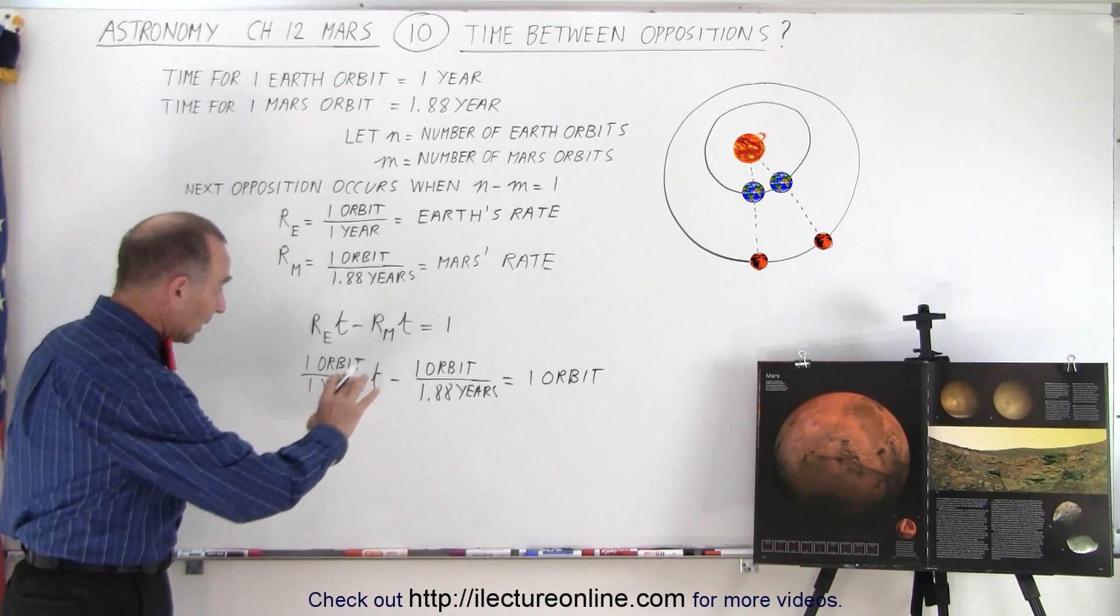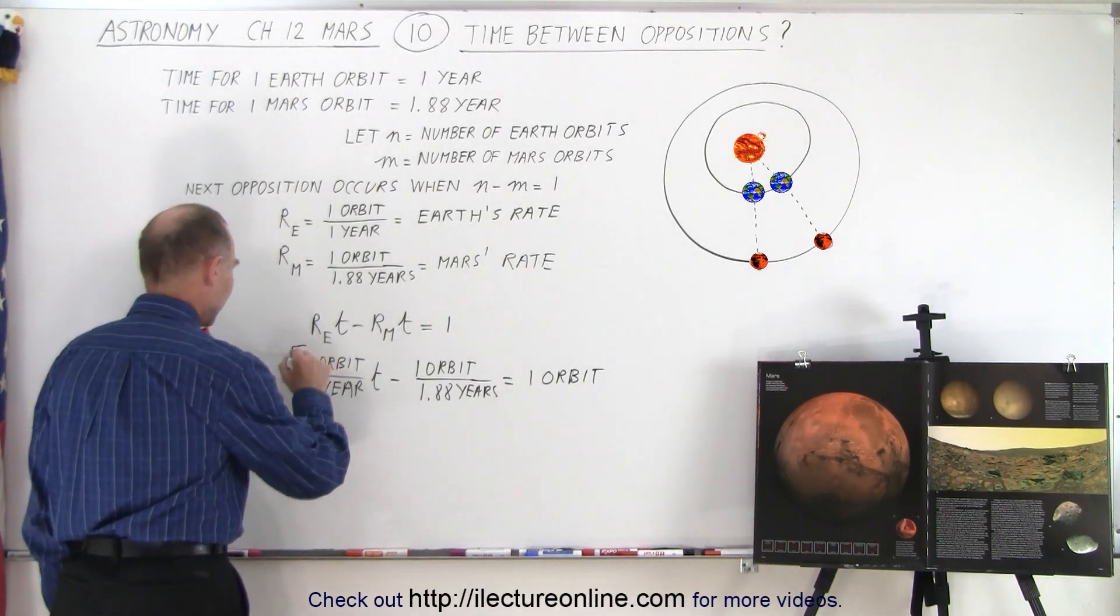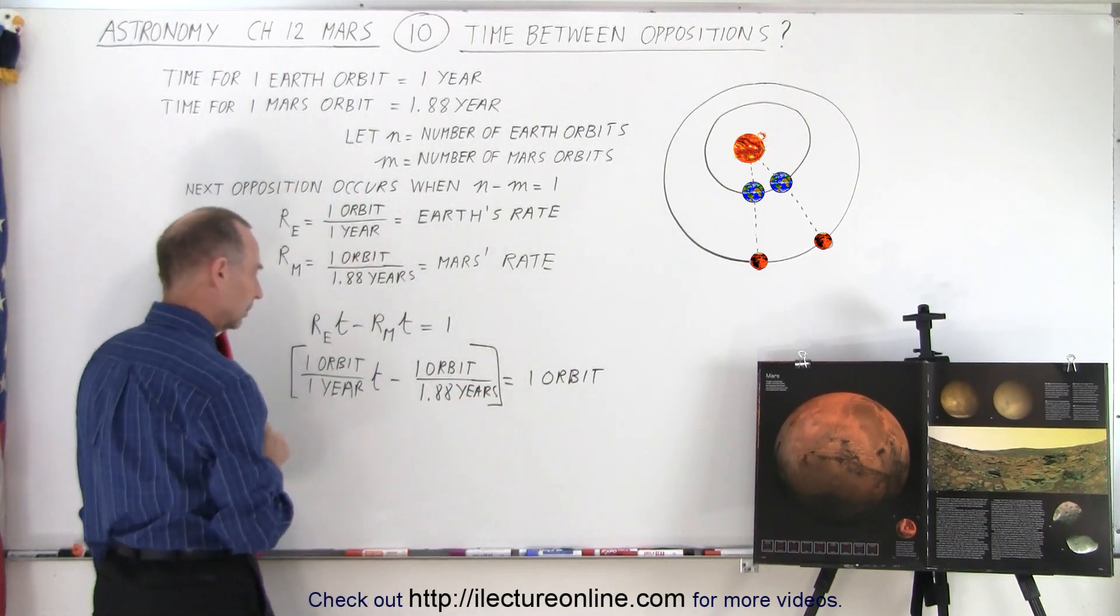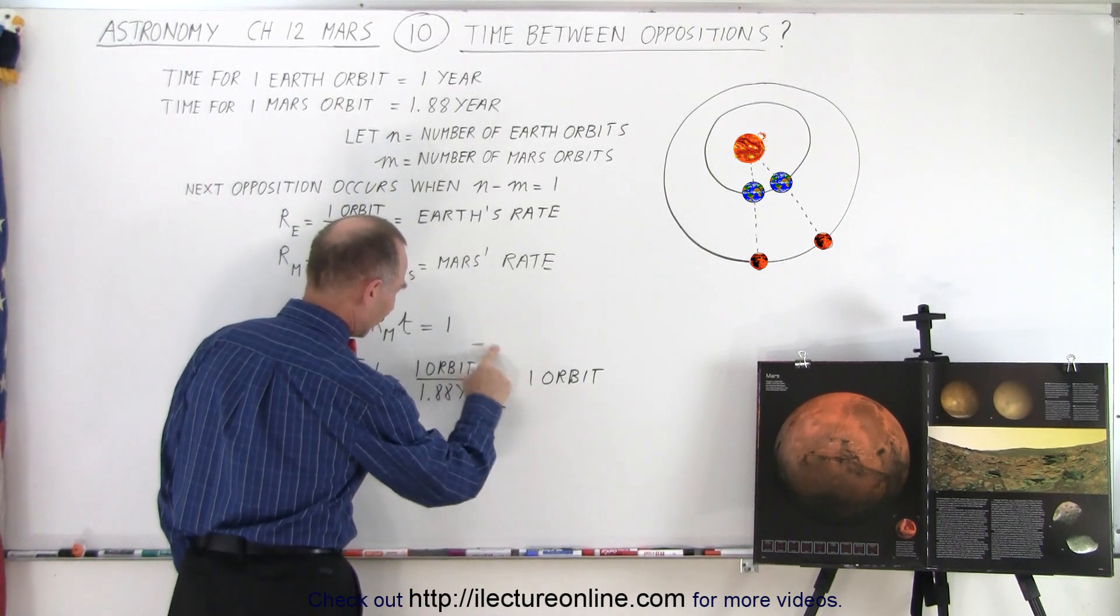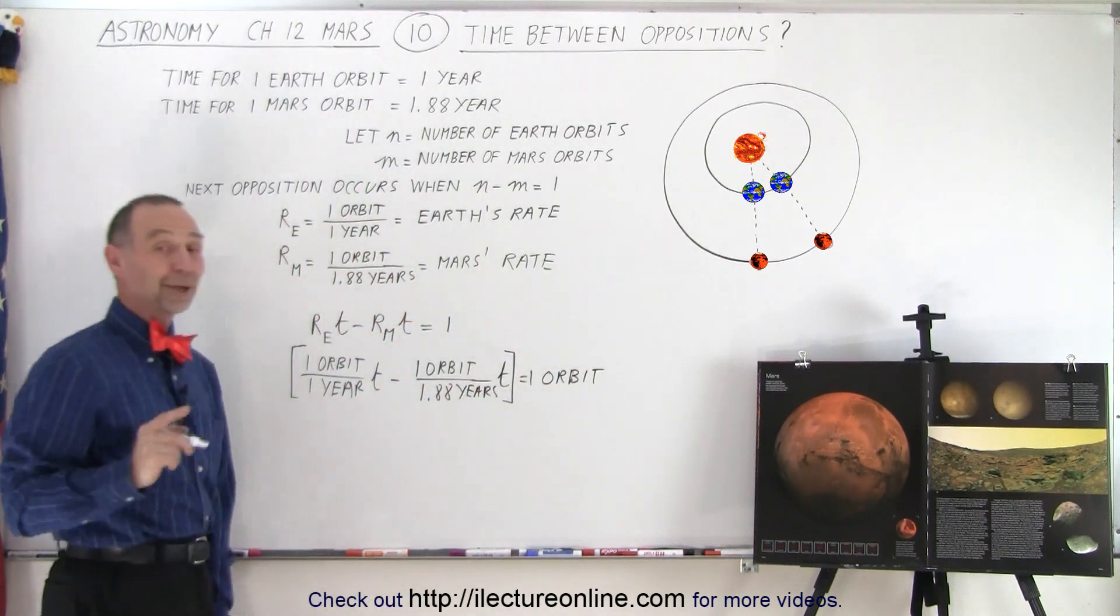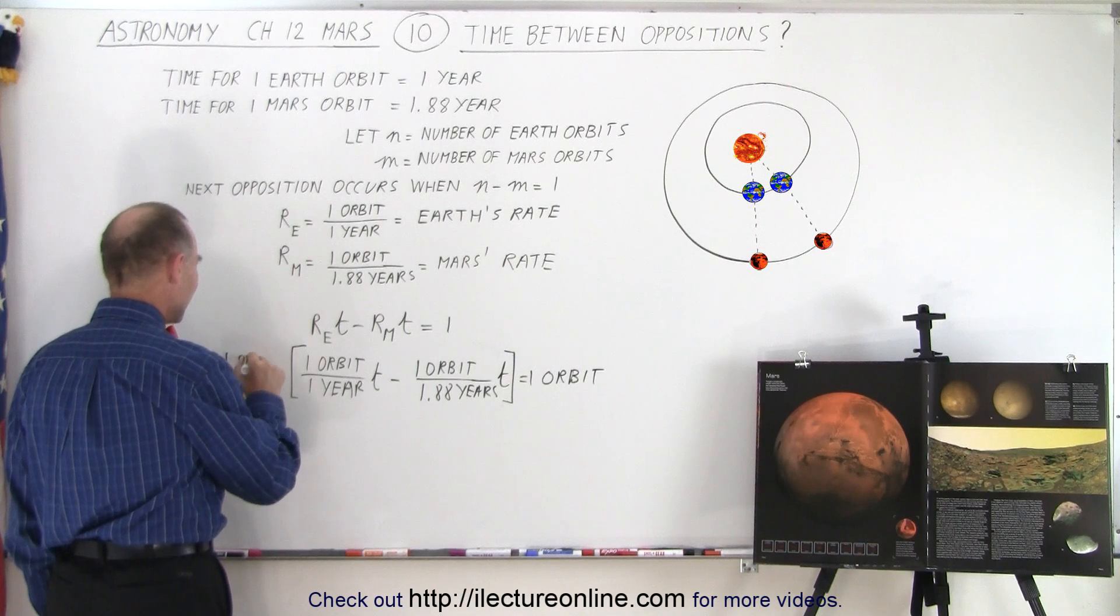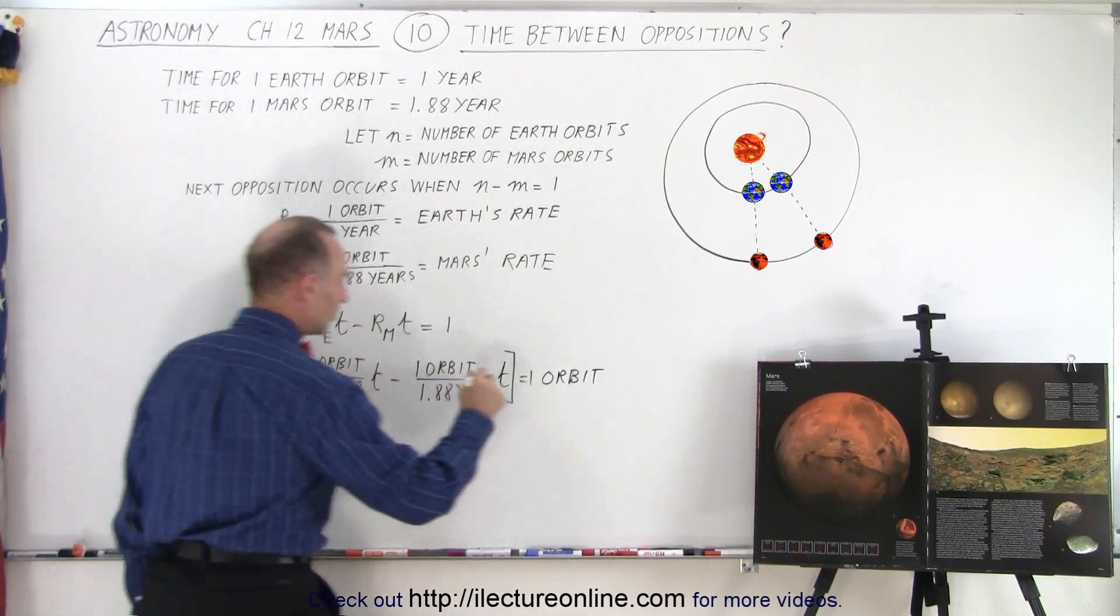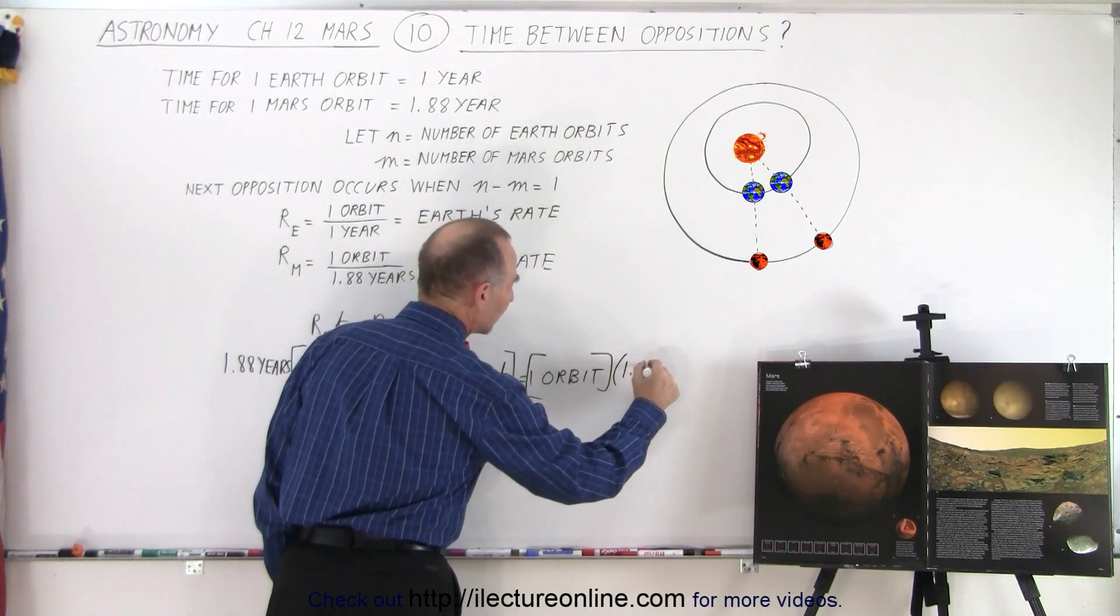Now we want to get rid of the denominators so we can multiply everything by 1.88 years. So if we multiply the left side, am I missing a t? I am certainly missing a t. Thank you for letting me know. There we go. Now we're good. Now we can go ahead and multiply everything by 1.88 years. And of course we need to do the same thing on the other side. So we multiply this times 1.88 years.